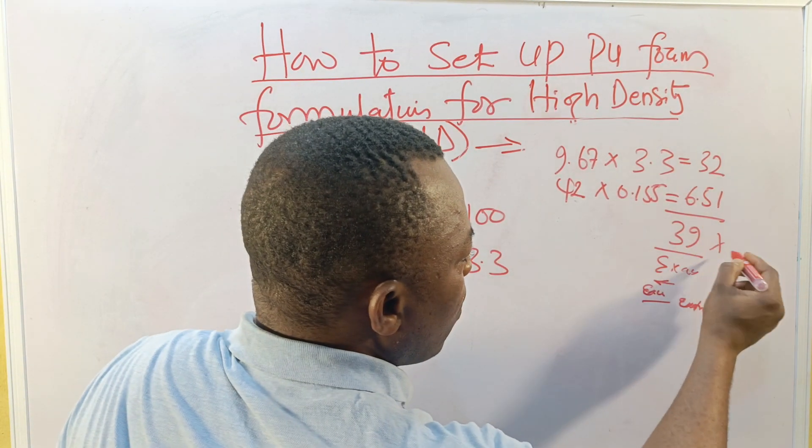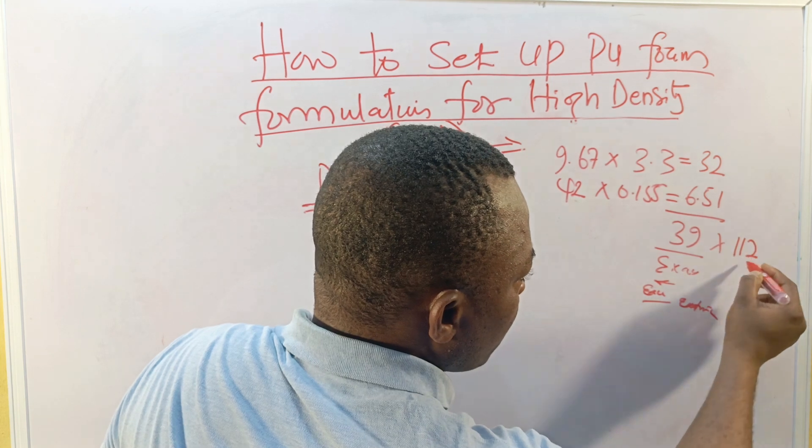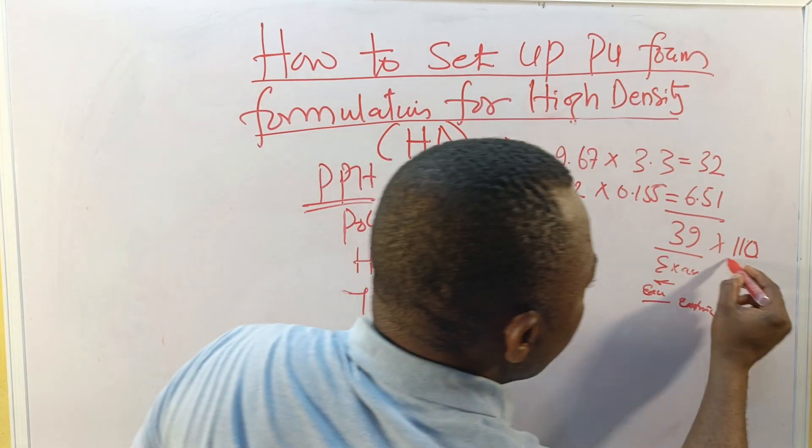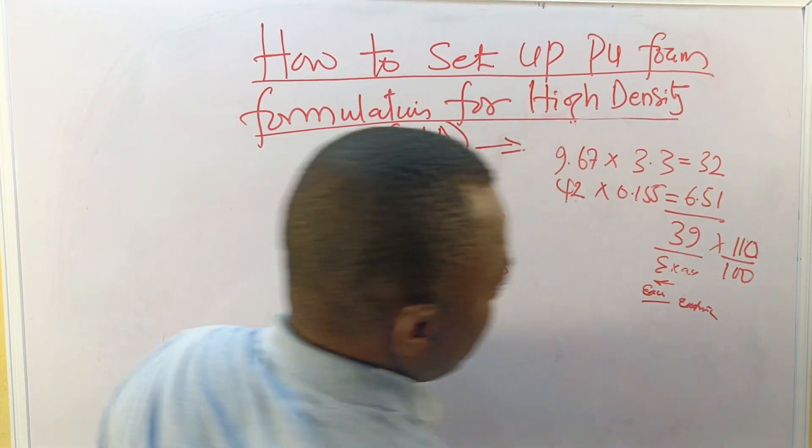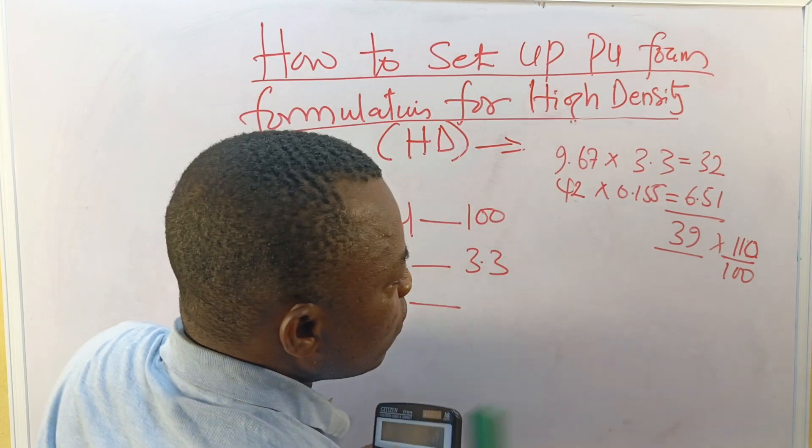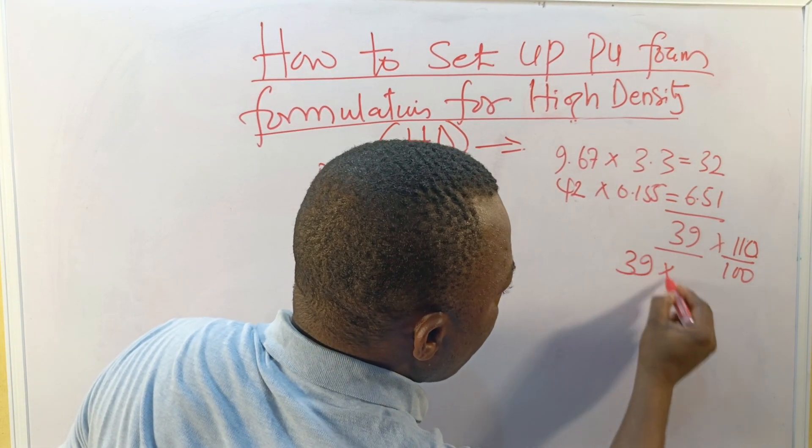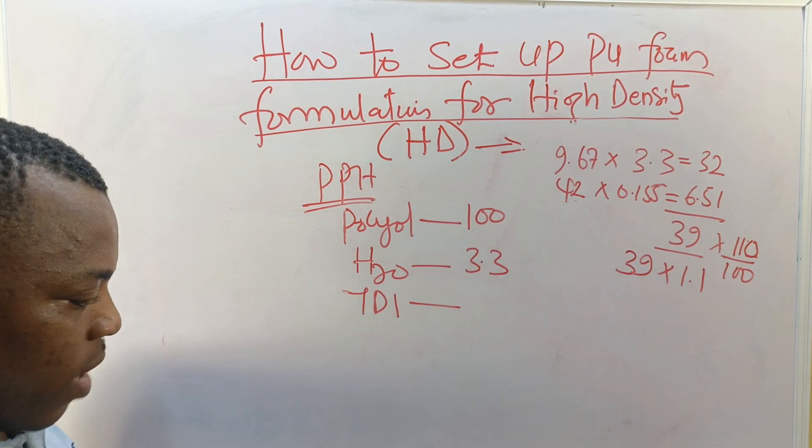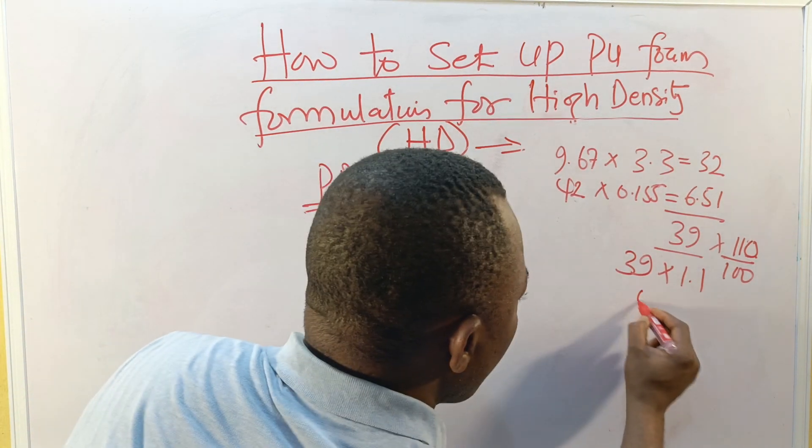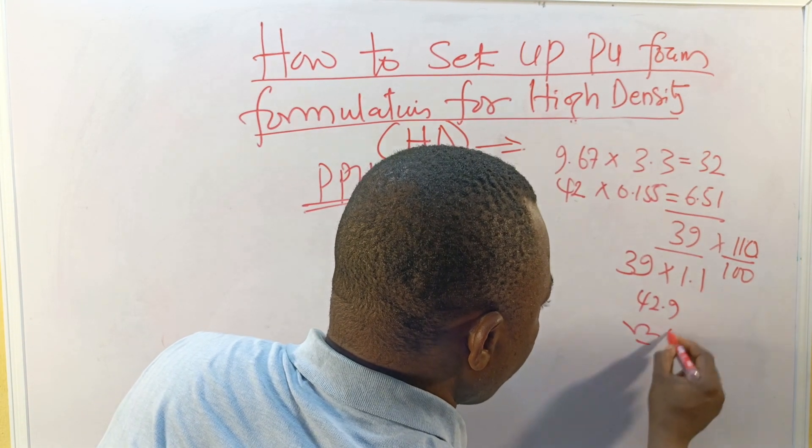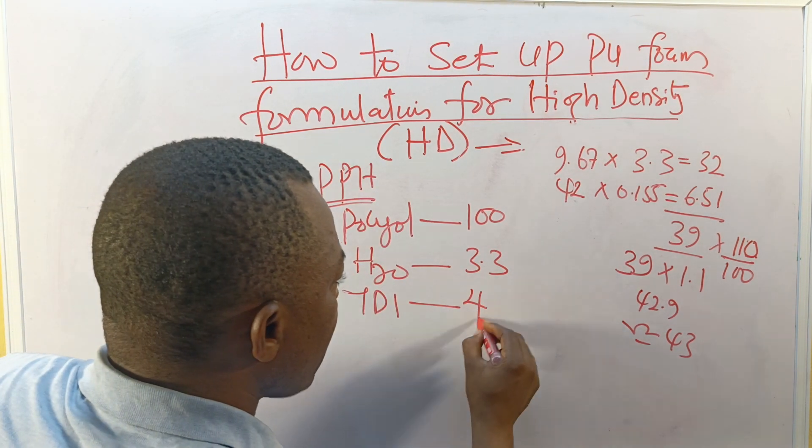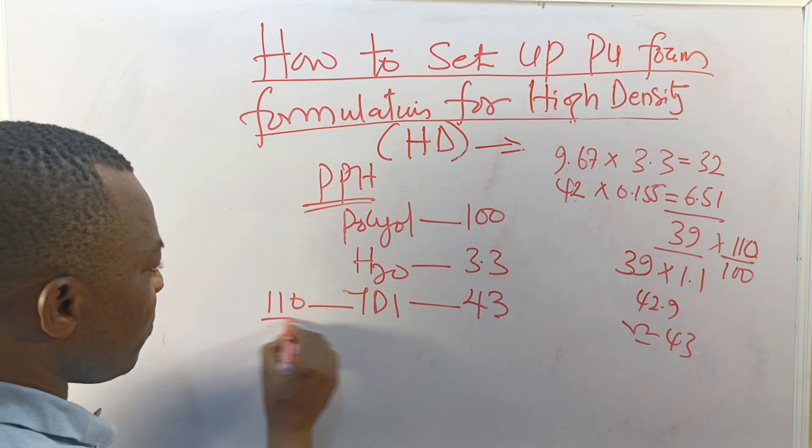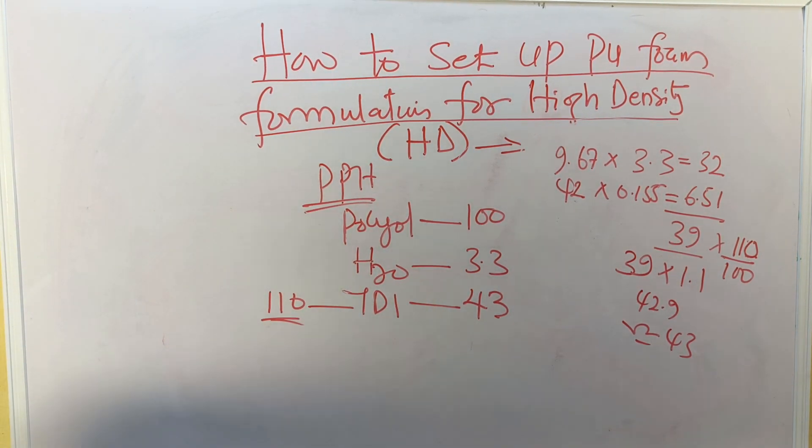The foam is already hard because it's high density. The property you are expecting is for the foam to have high resilience effects, so you don't need to increase your index of your TDI so much. In this case let us take an index of 110. You divide it by 100, so that would be 39 times 1.1, so 39 times 1.10 we have 42.9, approximately 43. So my TDI is 43, this is an index of 110.